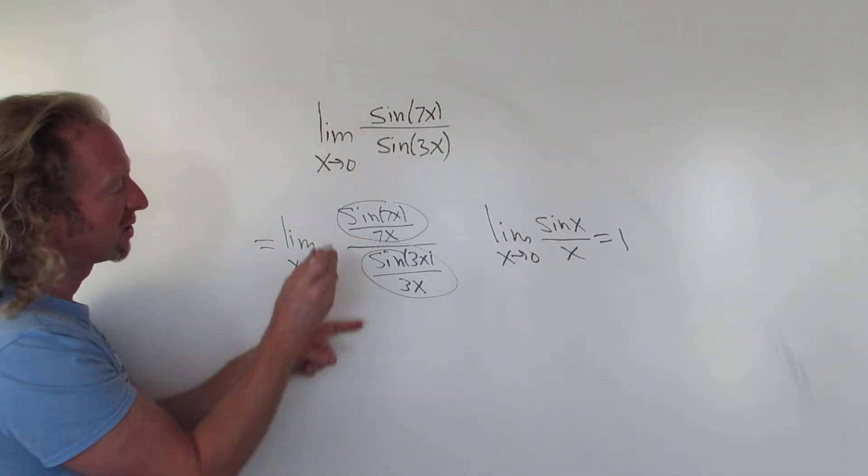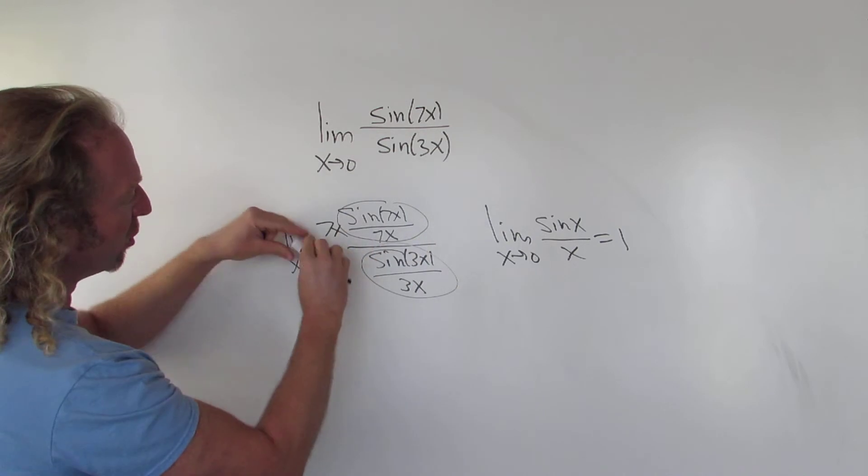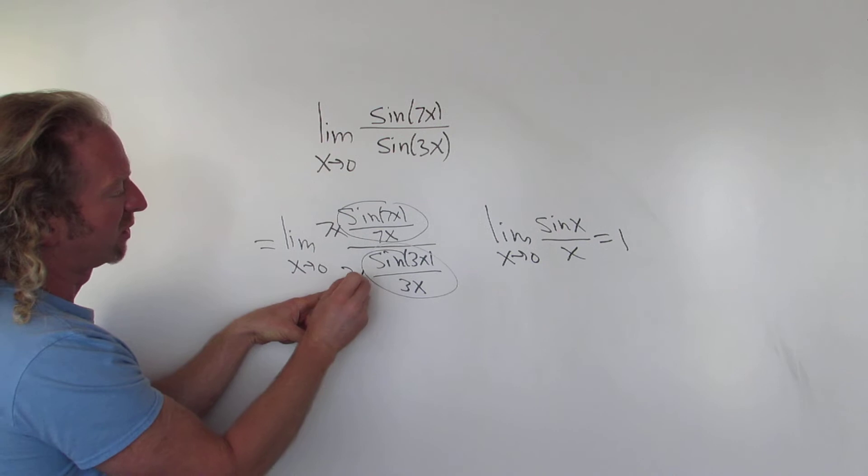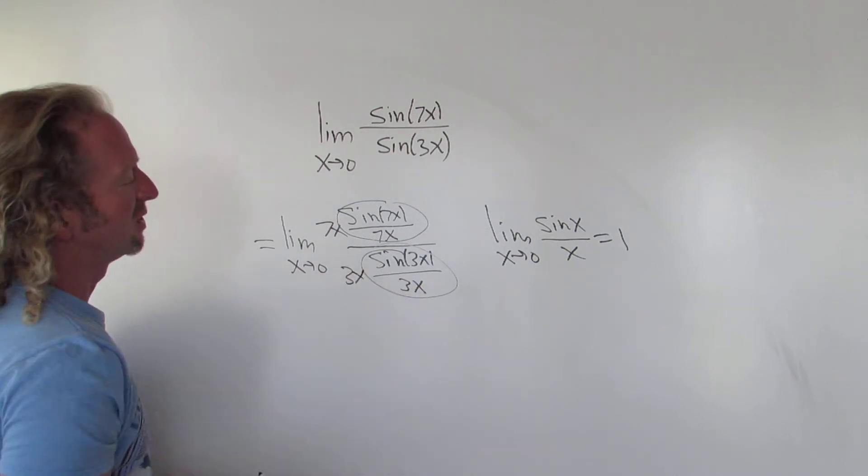So we have to fix this. We have to get rid of the 7x, so we'll just put a 7x here. Boom, they go away now. See, they cancel. Then here you have a 3x, so you have to get rid of that. Put a 3x here. Boom, they go away. They cancel.